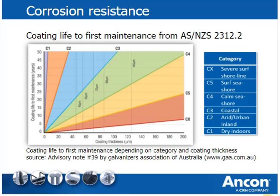Australian standard AS/NZS 2312.2, Guide to the Protection of Structural Steel against Atmospheric Corrosion by the Use of Protective Coatings — Hot-Dip Galvanizing, gives guidance on the expected lifespan of hot-dip galvanized items depending on coating thickness and corrosivity category. Most fasteners depend on threads to introduce load into the steel, which limits the coating thickness that can be applied. The thickness for hot-dip galvanizing varies from 50 to 70 microns for normal applications, providing a coating life of 25 to 50 years in coastal areas. When repetitive maintenance costs for renewal of corrosion protection are considered, stainless steel anchors are often the more economical solution.